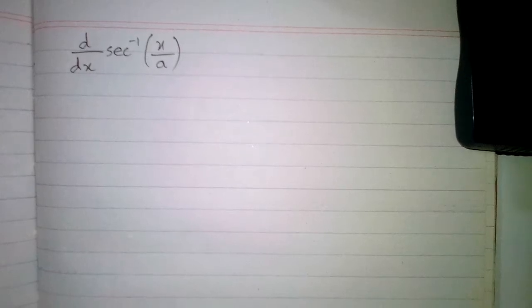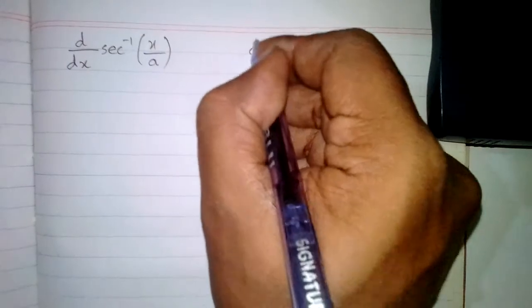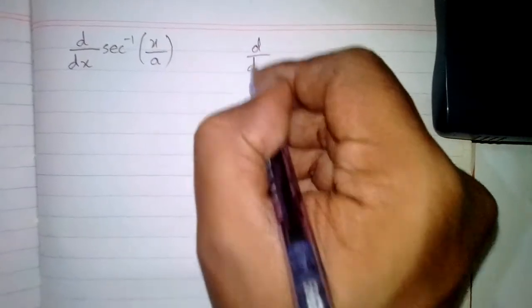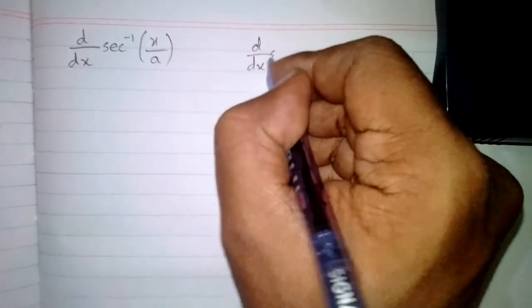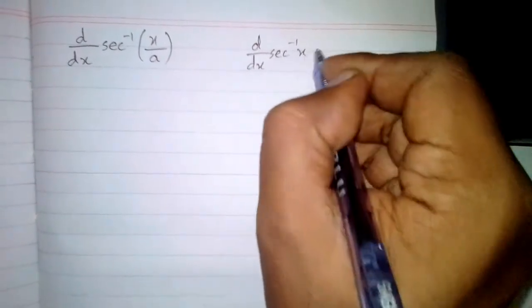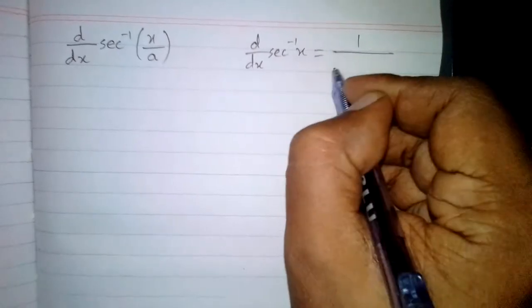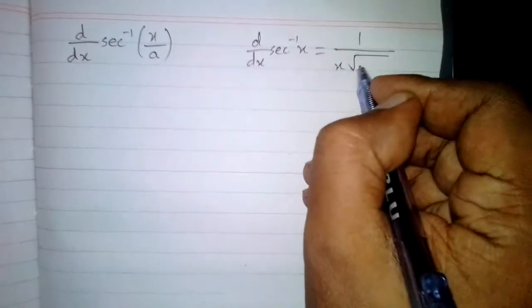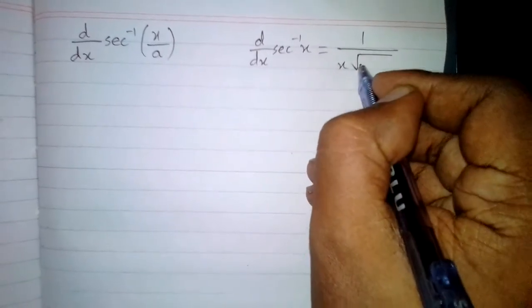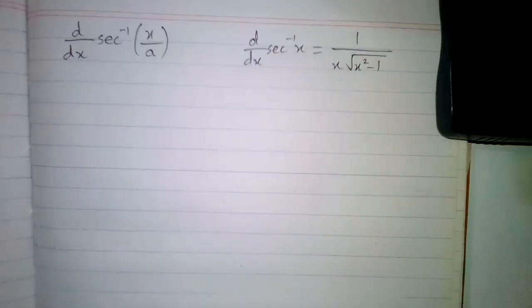In this video we will find the derivative of sec inverse x upon a. We know that the derivative of sec inverse x is 1 upon x square root of x squared minus 1.